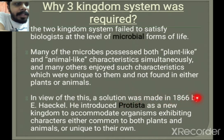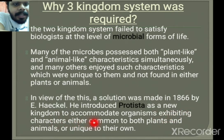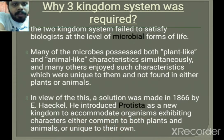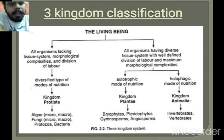That is why the three kingdom classification system arrived. In view of this, a solution was made in 1866 by Haeckel, who introduced Protista as a new kingdom to accommodate organisms exhibiting characters either common to both plants and animals, or unique to their own.